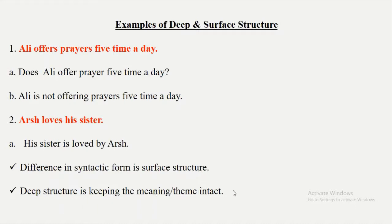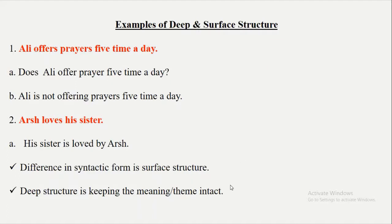The difference in syntactic form is termed surface structure, while deep structure keeps the meaning and theme intact. Deep structure always remains the same — it doesn't matter if the structure or syntactic form of the sentence is different. You can produce one sentence in different ways without changing the meaning. Producing the same sentence without changing its meaning is known as deep structure. Deep structure is the semantic meaning of the sentence.